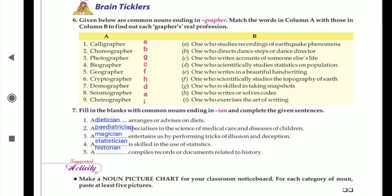Next one is a diet that specializes in the science of medical care and the diseases of children. Then pediatrician. Next one is a diet entertains us by performing tricks of illusion and deception. Magician. Then a blank is skilled in the use of statistics. That is the statistician.